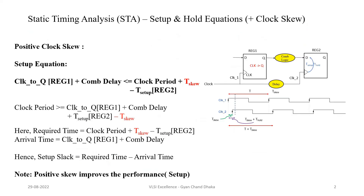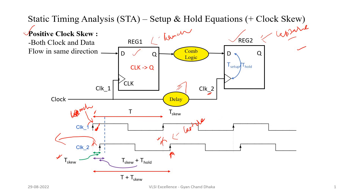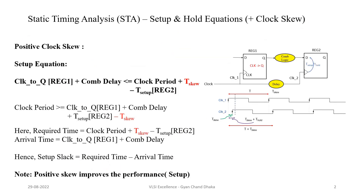With positive clock skew, the delay is getting increased between the launch and capture flip flop. This is positive clock skew because the data flow and the clock are both going from the launch flop to the capture flop — both directions are the same. So the clock skew introduced in this case is positive clock skew. Now let us see how the setup and hold equations will be impacted.